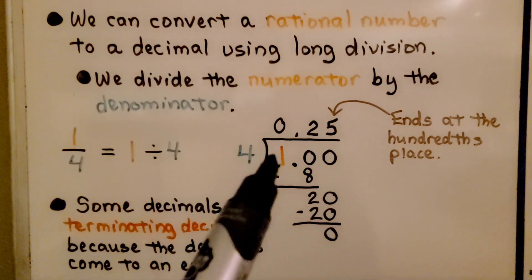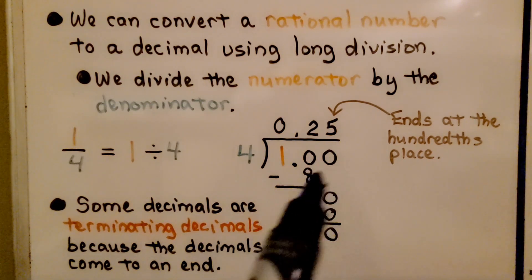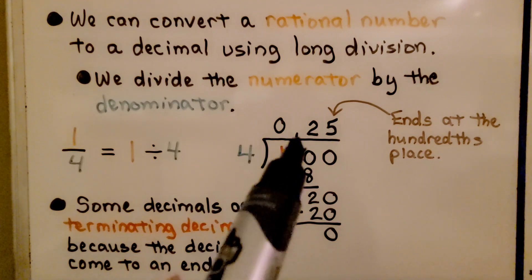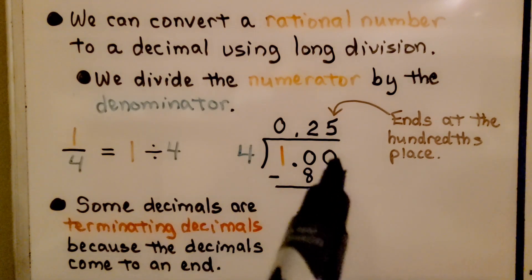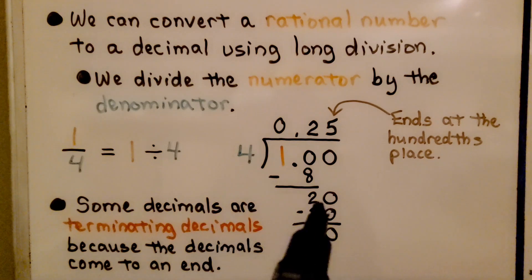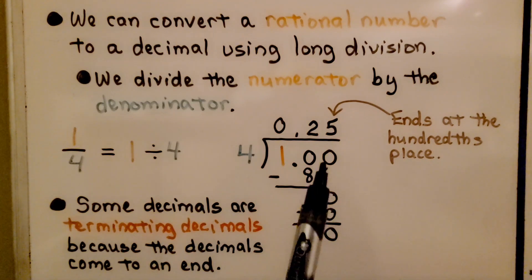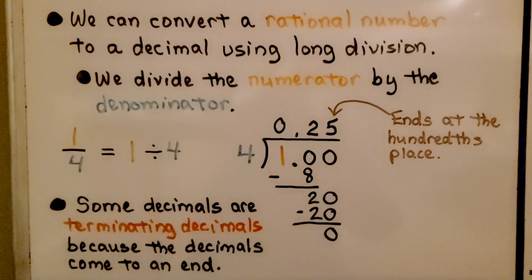4 cannot fit into 1, so we put a 0 above it. We add a decimal point and 0s to the right of the decimal point to keep dividing. 4 fits into 10 two times, so we write a 2 here. 4 times 2 is 8; we subtract to get 2. We drop down the 0, 4 fits into 20 five times, and 4 times 5 is 20. We have a 0 remainder, and this decimal ends at the hundredths place. Some decimals are terminating decimals because they come to a distinct end. We know 1 fourth is equal to 25 hundredths.